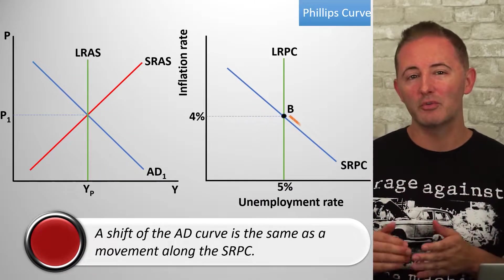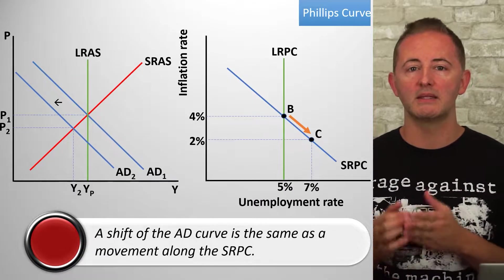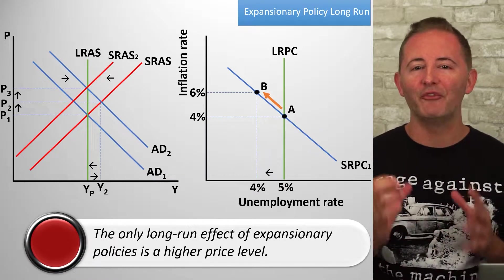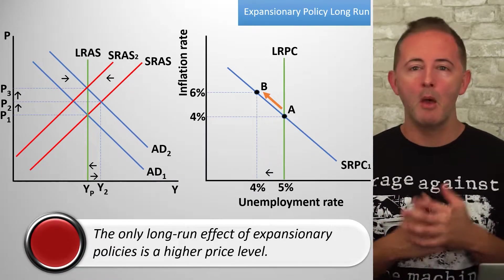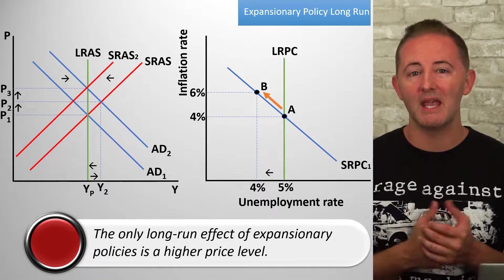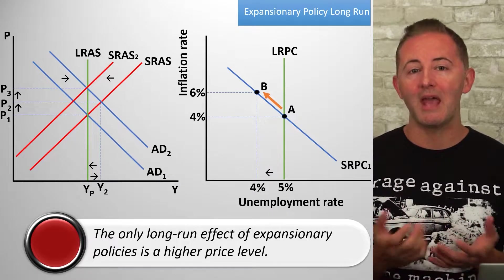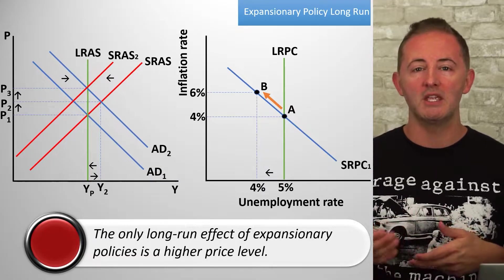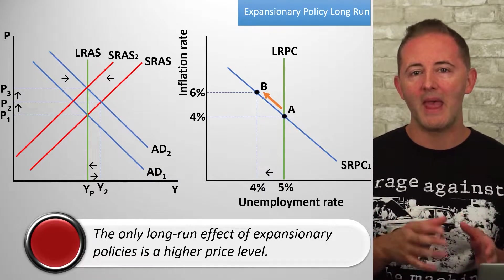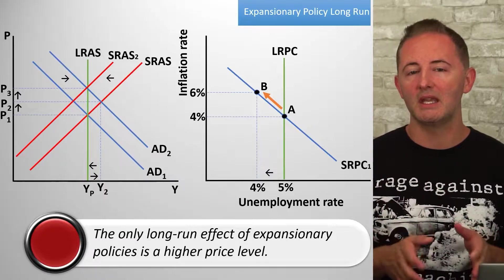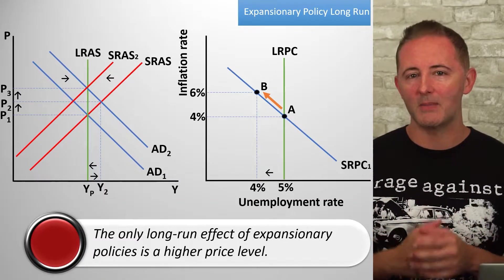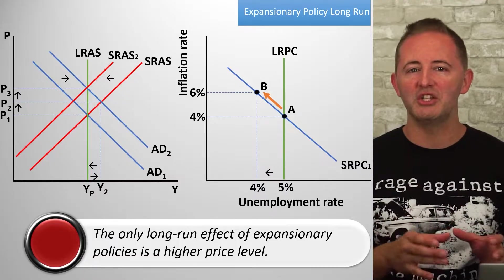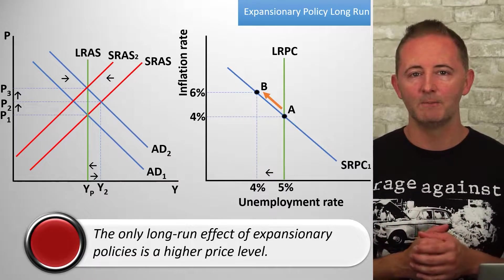A downward movement of the SRPC corresponds to the AD curve shifting left. At point B, the economy is in an inflationary gap, perhaps because of expansionary policy implemented by policymakers, and actual output is greater than potential, and unemployment is below the natural rate. On the AD-AS model, sticky wages make this possible, but on the Phillips curve model, we typically use inflationary expectations to explain this.